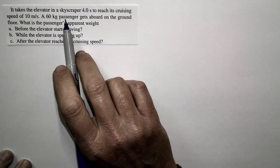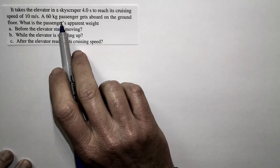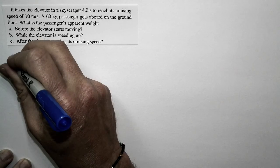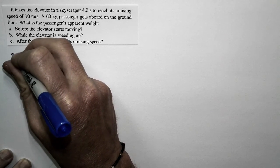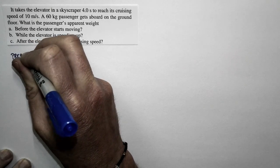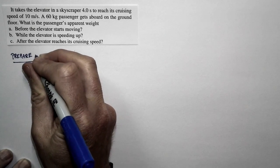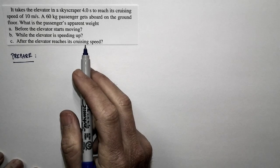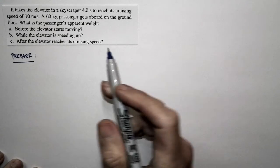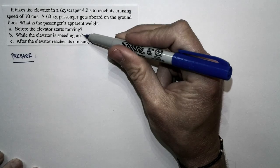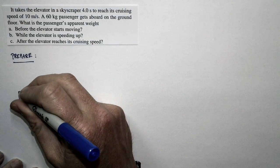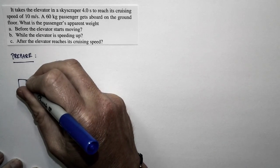This problem is about an elevator, and we're looking at a 60-kilogram passenger in the elevator as it's moving, and we want to consider the passenger's apparent weight. There's a lot of preparation to do in solving this problem, but by taking lots of time and care with the prepare step, we'll be able to do the solution step quite straightforwardly. There are three different conditions: before the elevator starts moving, while it's speeding up, and after it reaches its cruising speed, but in each case the basic situation looks like this.